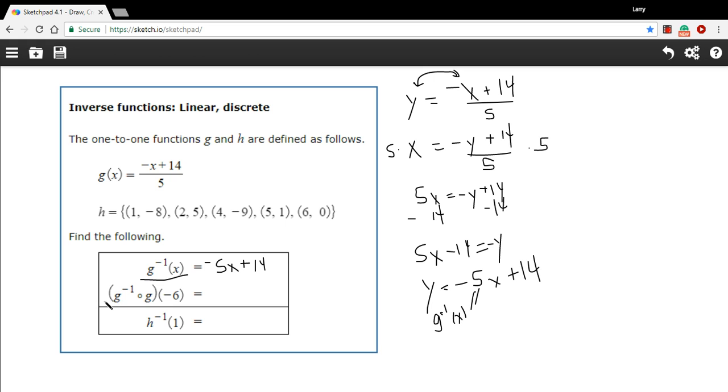Okay. This next problem, the inverse of g composed with g of negative 6, and you can go ahead and do the composition. You can put g inside the inverse of g. What you find out when you do that, when you compose an inverse with a function, you always just get x.